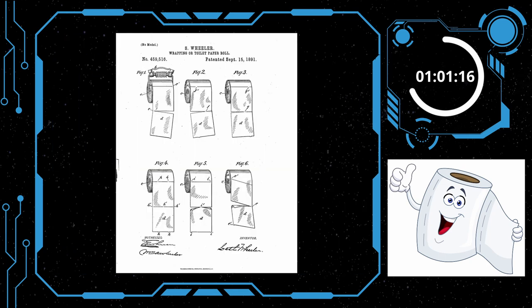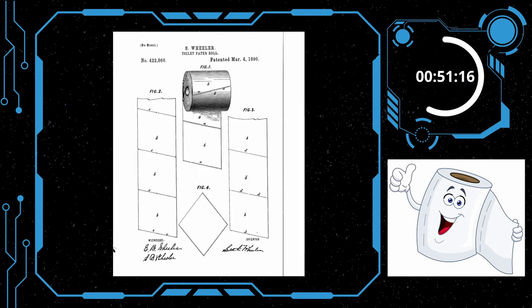Seth Wheeler of Albany, New York, obtained the earliest US patents for toilet paper rolls and dispensers. A lot of people point to this patent as the reason over-the-top is the correct way, but there were earlier patents that show the underneath method.